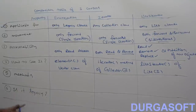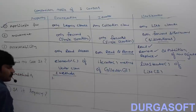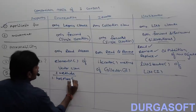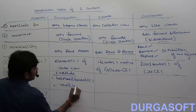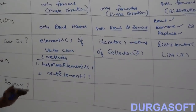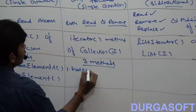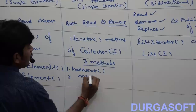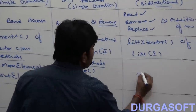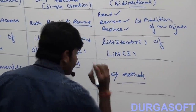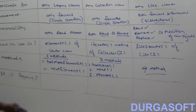Next, methods. Enumeration contains two methods: hasMoreElements() and nextElement(). Iterator contains three methods: hasNext(), next(), and remove(). List iterator contains nine methods — not required to spell out all nine since we already covered them. So more capability is expected from list iterator.